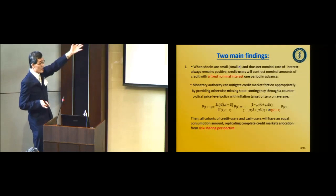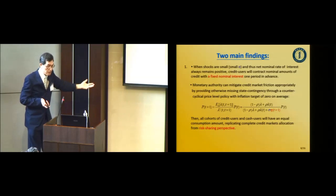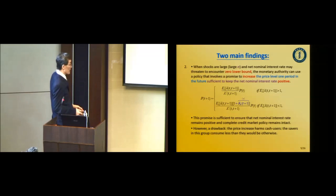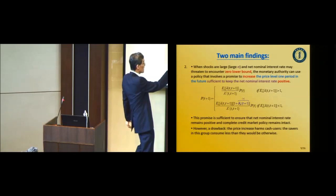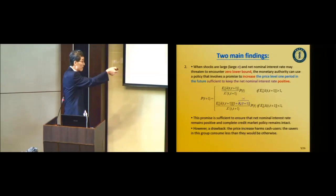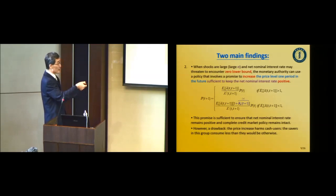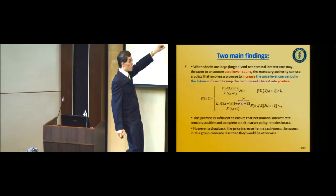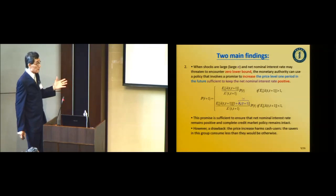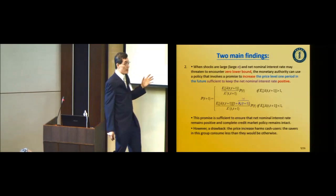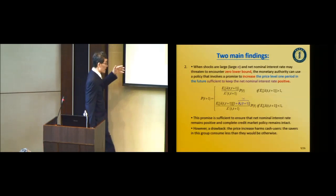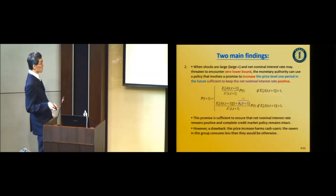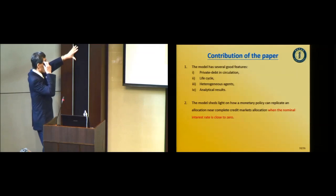Given that contracts are determined in nominal terms and at least one period ahead, this creates a critical credit market friction. In this kind of shock, monetary policy can mitigate these credit market frictions by providing state-contingent conditions through a counter-cyclical price level policy — which in this model means nominal GDP targeting. Because the shock is small negative, the price will still be positive and will increase. With this nominal GDP targeting policy, all cohort credit users have an equal consumption amount — perfect consumption smoothing — replicating a complete credit market allocation from a risk-sharing perspective. However, if sigma is negative and large, there is a side effect that cash users may be harmed.